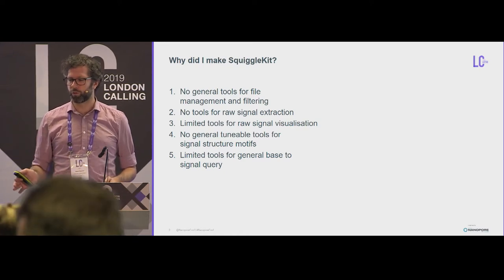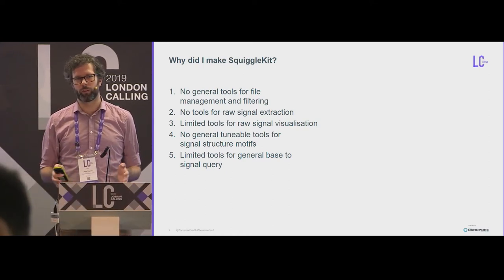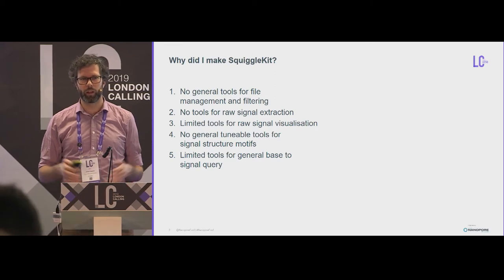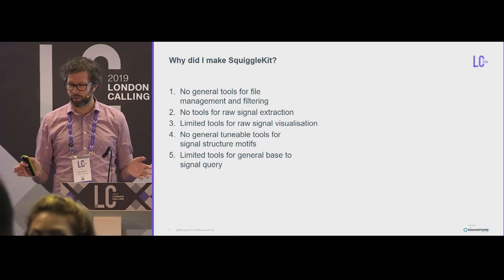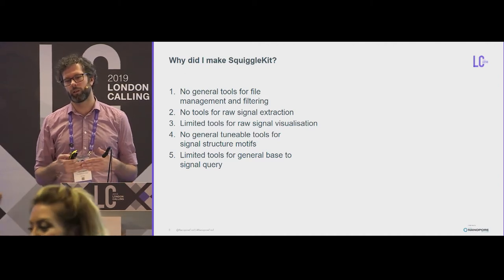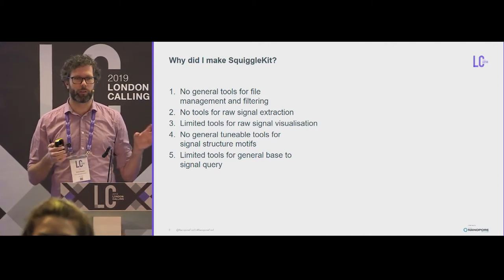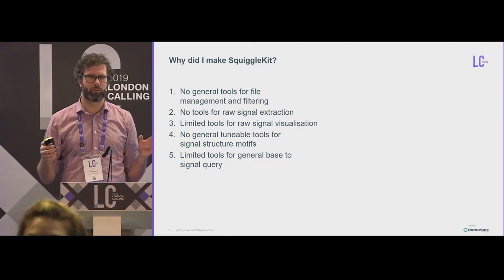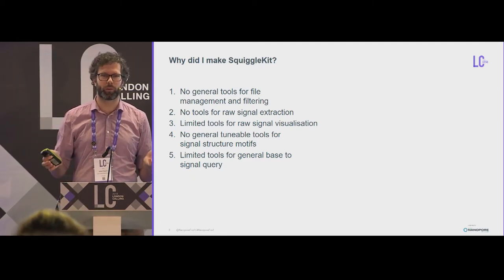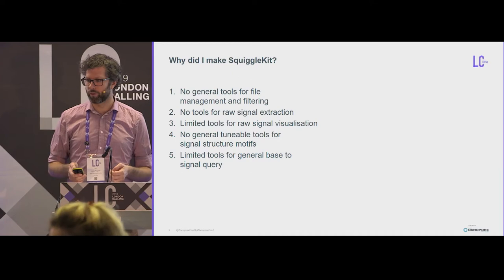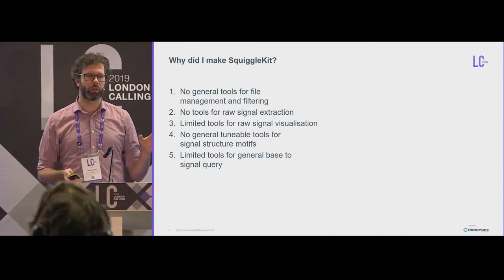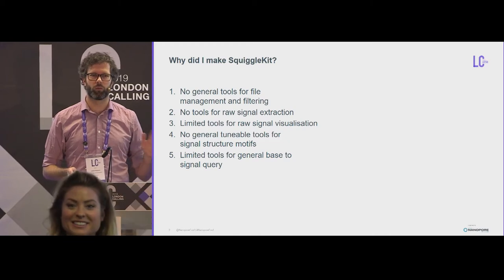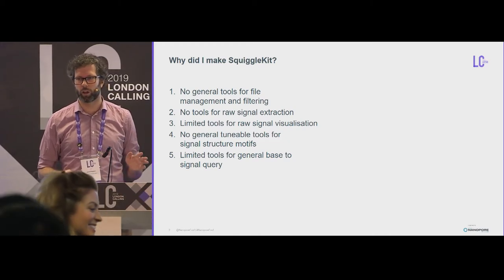But there are no real general tools for managing and filtering your Fast5 files. You've got millions and millions of files, we'll get to multi Fast5 later. And you had to manually kind of grab these without trying to destroy your HPC or your laptop, and so I wanted to get around that. There were no tools for raw signal extraction. Everyone was still kind of in the event space, and raw was only just coming through with the new recurrent neural networks.